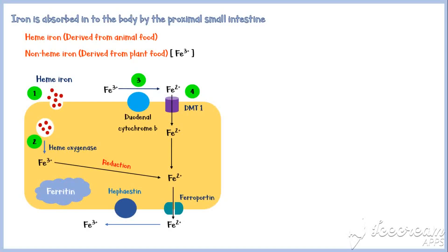Then ferrous leaves the cell through a transporter in the basolateral membrane called ferroportin, in order to be absorbed into the circulation, as indicated by number 5 in the diagram.